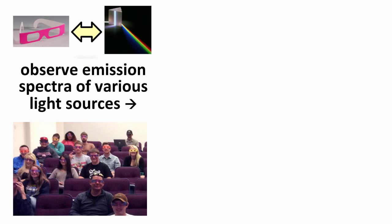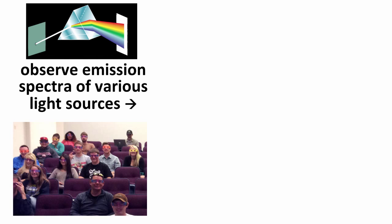If we wear diffraction-grading glasses, or for that matter use a prism, and observe spectra of different light sources, then we can see the prism or diffraction-grading separate the white light, or whatever color light it is, into its spectral components.